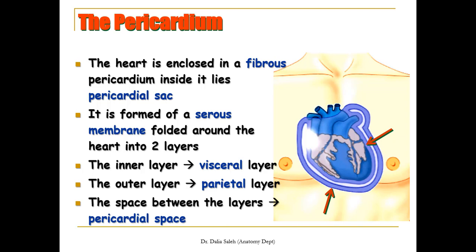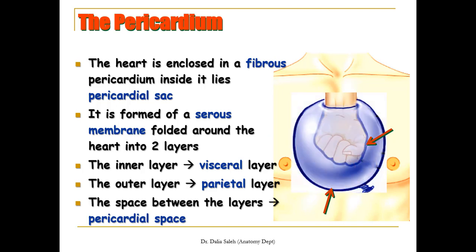The space between the visceral layer and the parietal layer is called the pericardial space. To imagine these two layers, think of the heart as your fist and the serous pericardium as an inflated balloon that you press your fist into. The skin of the balloon close to your fist resembles the visceral layer, while the outer skin resembles the parietal layer of the serous pericardium. The space between these two layers resembles the pericardial space.